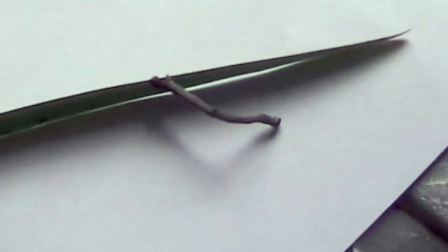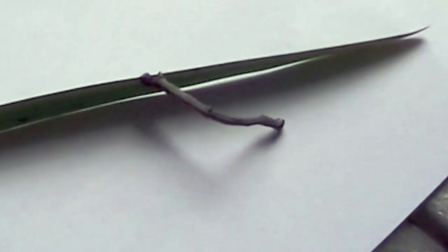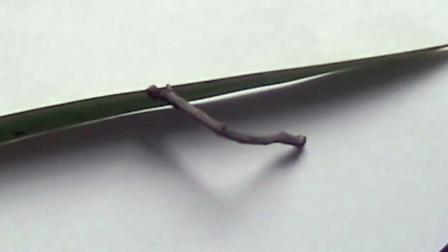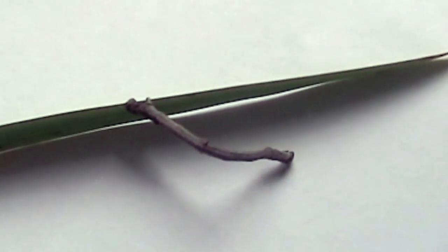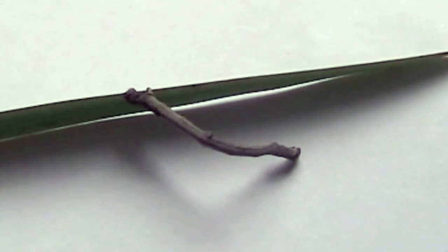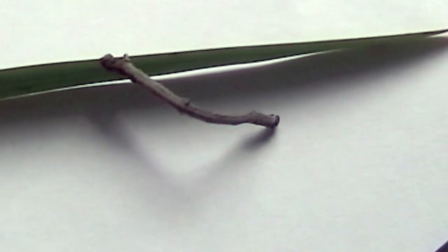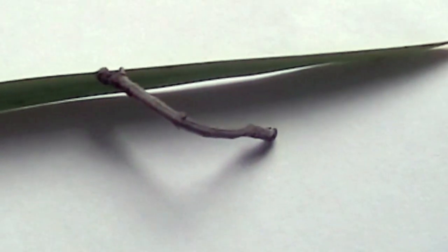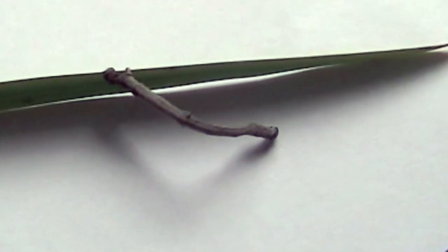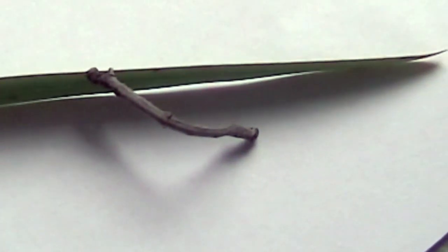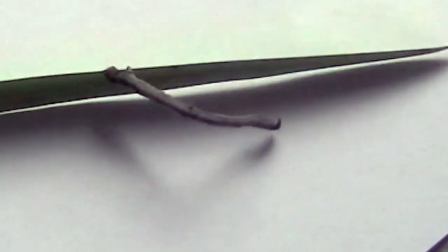...is something that looks just like a twig attached to the leaf. But it isn't a twig, it's a creature, and it's got legs that are attached to the leaf at the base.